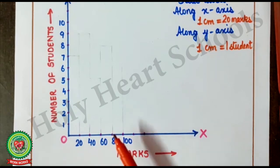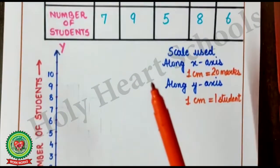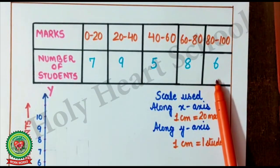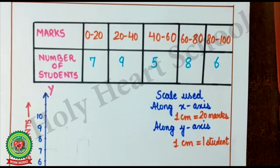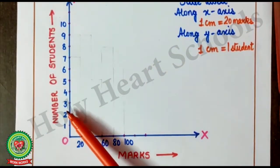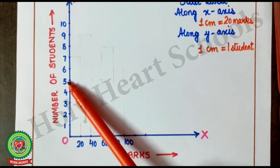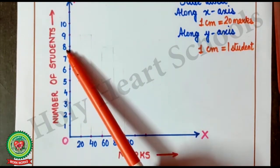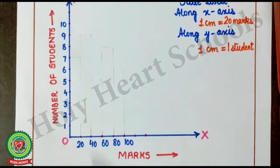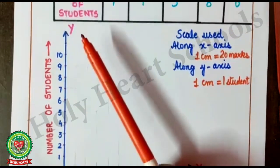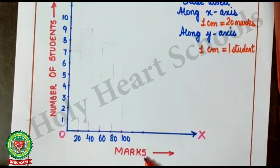Here, in number of students, all numbers are less than 10. So, I can easily take table of 1. So, here, 1-1 cm. I have taken table of 1. 1, 2, 3, 4, 5, 6, 7, 8, 9, 10. So, first we will complete first 6 informations. X, O, Y, marks, number of students.